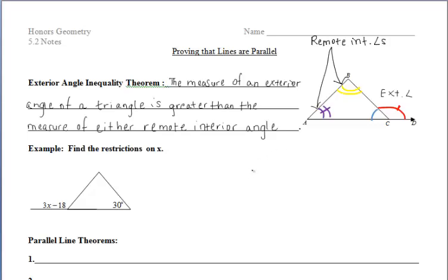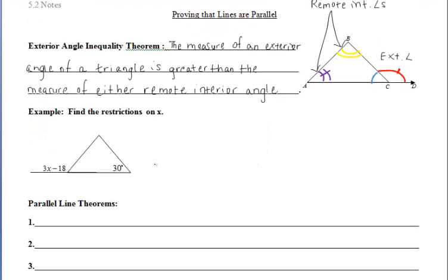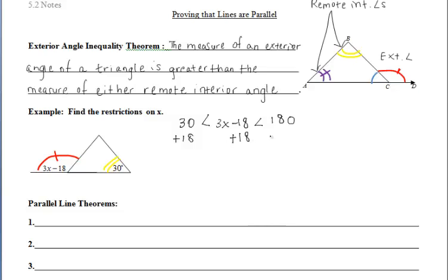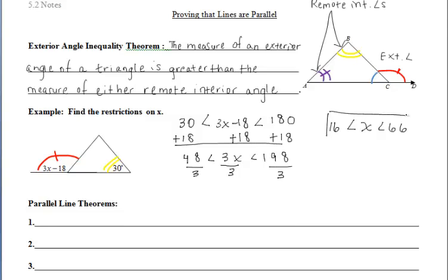For example, if we're looking here and we want to find the restrictions on X, we have our exterior angle and then we have one remote interior angle. Based off of that theorem, we can say that 3X minus 18, which represents our exterior angle, must be greater than 30, which is the measure of one of the remote interior angles. But that angle must also be less than 180 degrees, since it's not a straight angle. When solving an inequality, you have three different pieces, so when you're adding 18, you want to make sure you're adding it three times. Once we're done solving, we can say that X must be greater than 16 but less than 66.